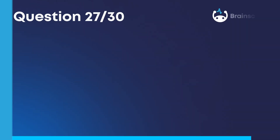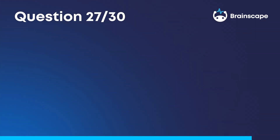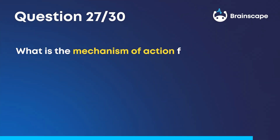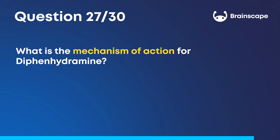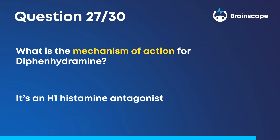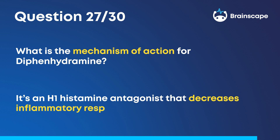Question 27. What is the mechanism of action for diphenhydramine? It's an H1 histamine antagonist that decreases inflammatory response.